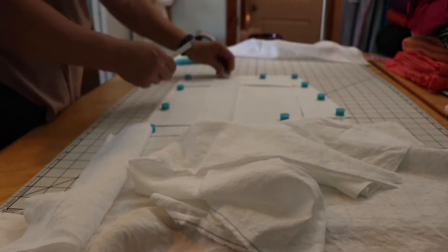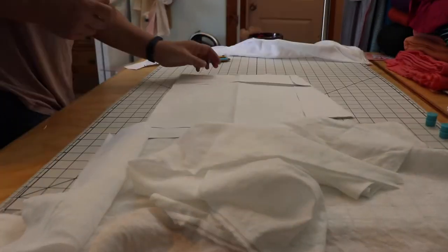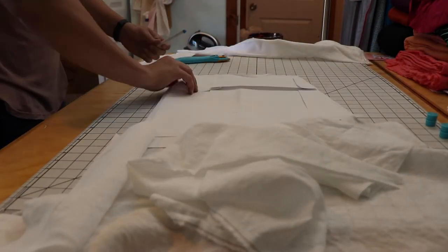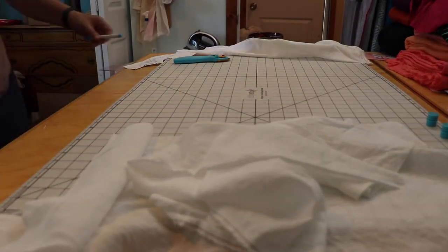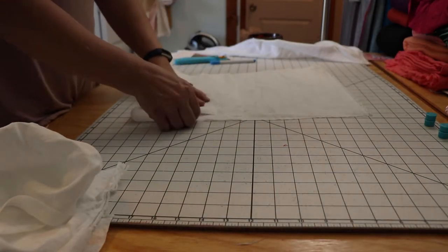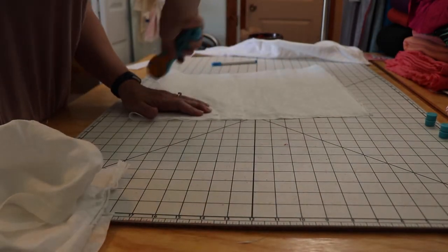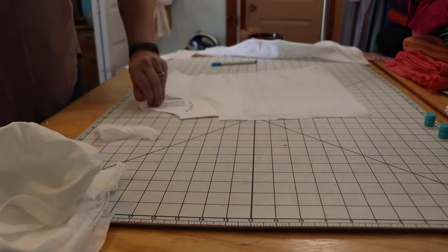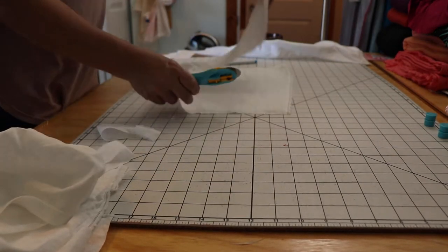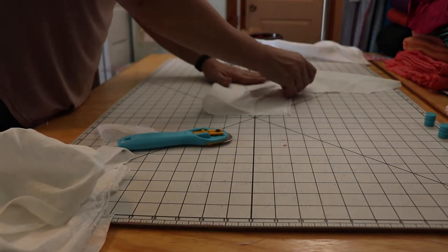Okay, so that's both skirt pieces cut out. And after I mark this pattern piece I will be cutting out the facing. This is the back neck facing, and now this is the front neck facing.